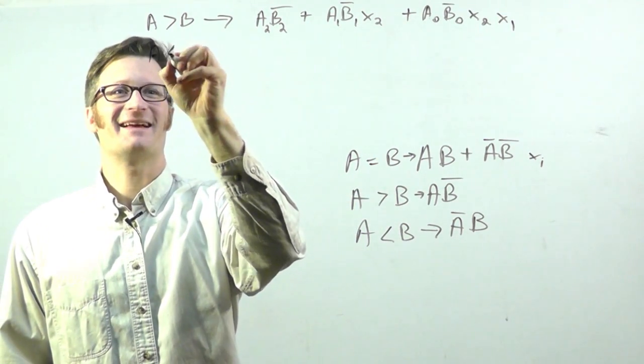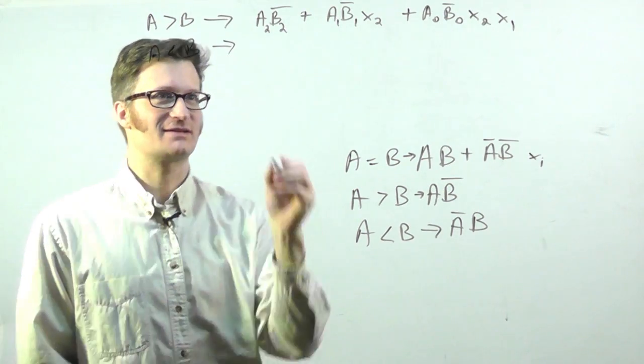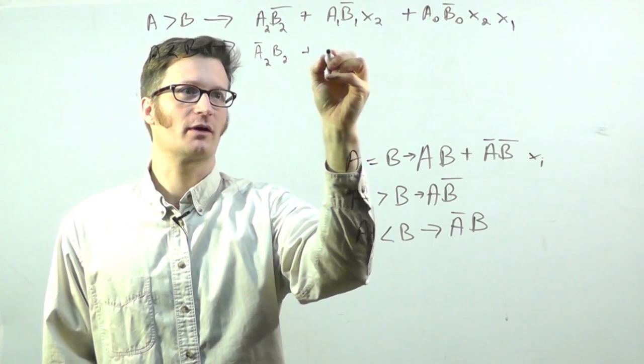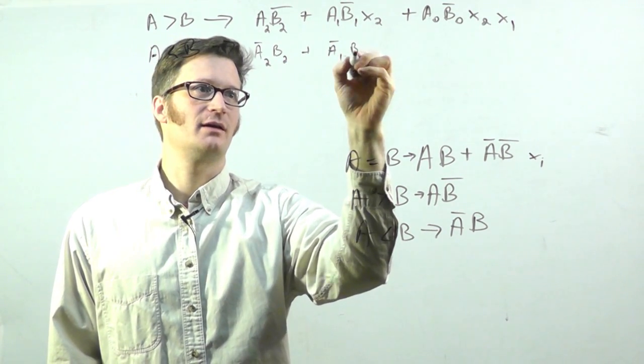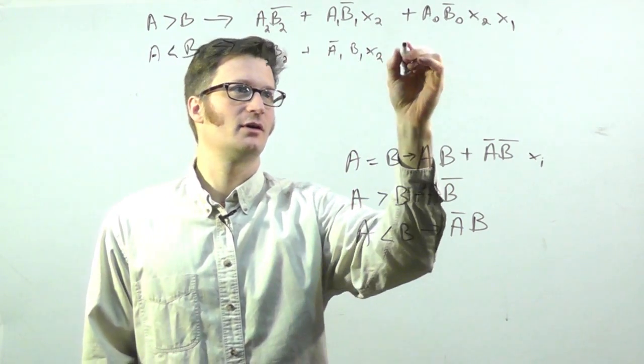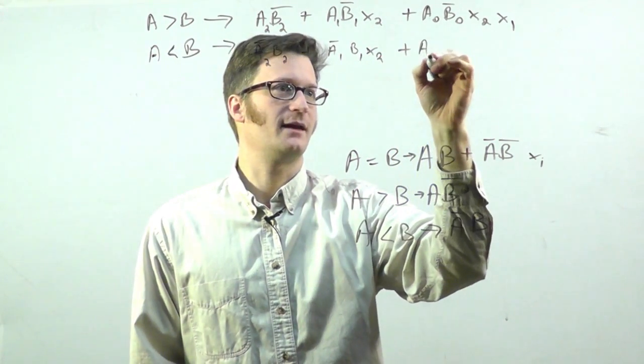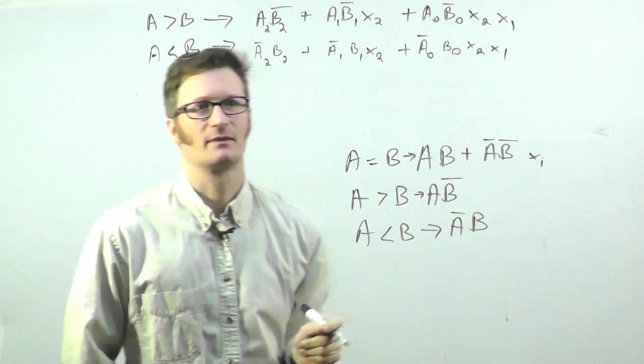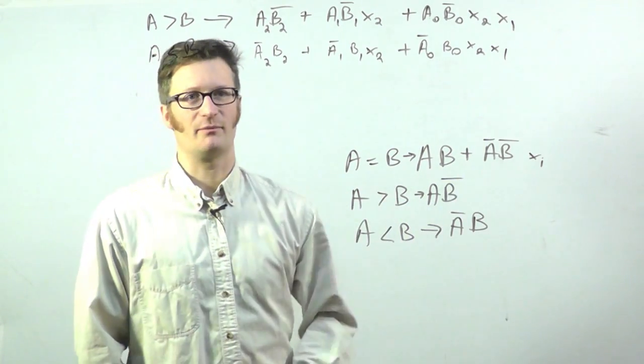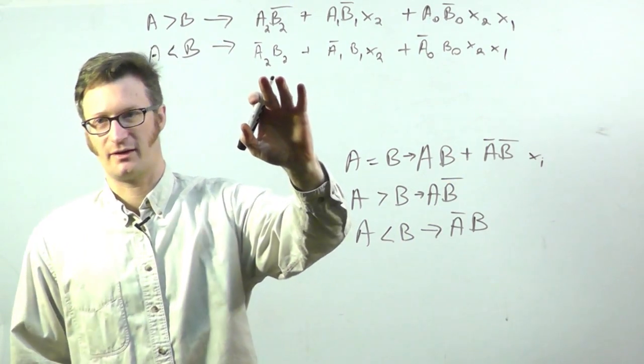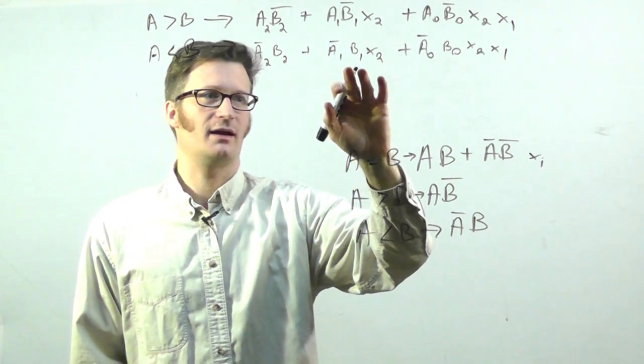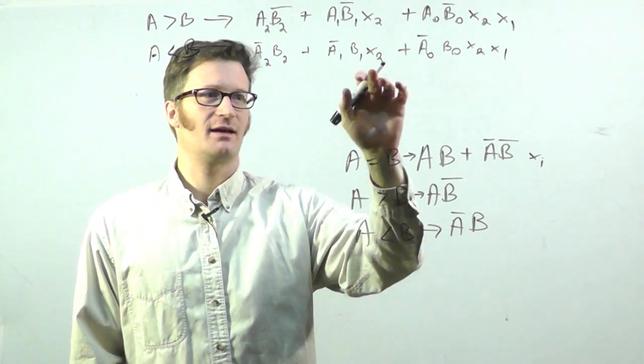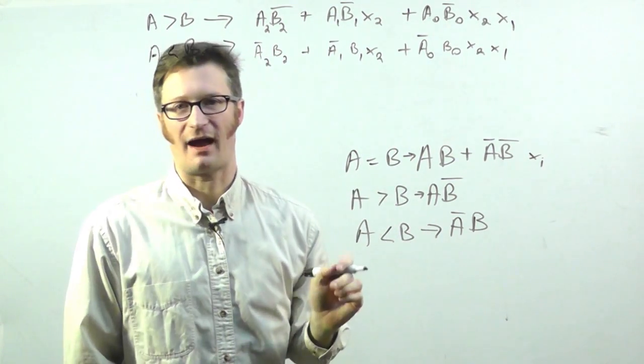A less than B is just pretty much the same thing. So it's A̅₂ B₂ or A̅₁ B₁ X₂ or A̅₀ B₀ X₂ X₁. And it's just working the same way. We're looking at the most significant bit and putting priority on it. And each of these bits, in order to register that A is less than B, the more significant bits have to have been equal.